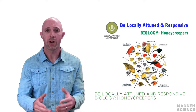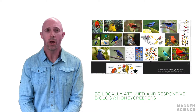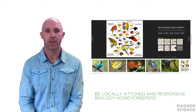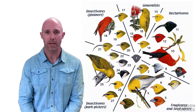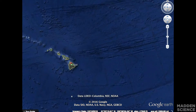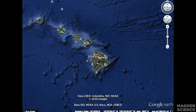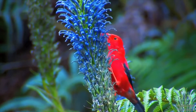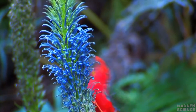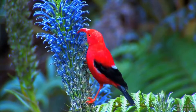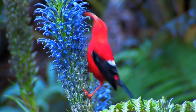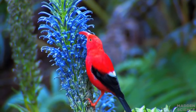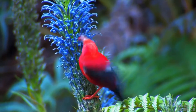Hawaii's honeycreepers are a dynamic biology example of the life's principle: be locally attuned and responsive. These colorful and vibrant birds, endemic to the Hawaiian Islands, are a model of evolution and adaptive radiation. Honeycreepers have been locally attuned and responsive to the Hawaiian Islands' geography, geology, and climate for thousands of years. They've undergone noticeable changes to their coloration and beak shapes as they've adapted to specific niches, with exquisitely honed beaks attuned to local food sources, evolving novel and more highly adapted beak shapes and sizes.